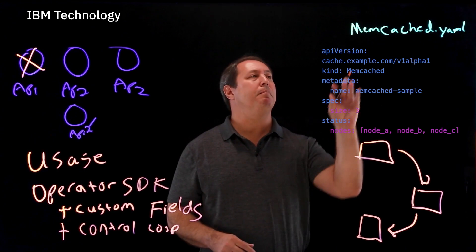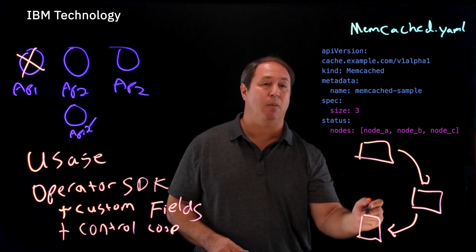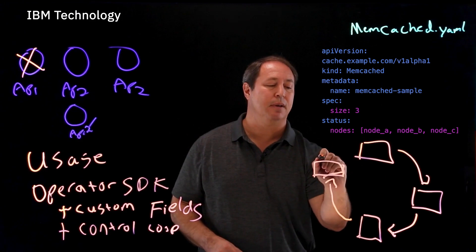Maybe there weren't enough memcacheds that were there. Maybe we need to add one. Maybe we need to start one up. So that's what's going to happen at reconcile state. And then in the last step, we're going to report back the status. And that's the full reconcile loop.